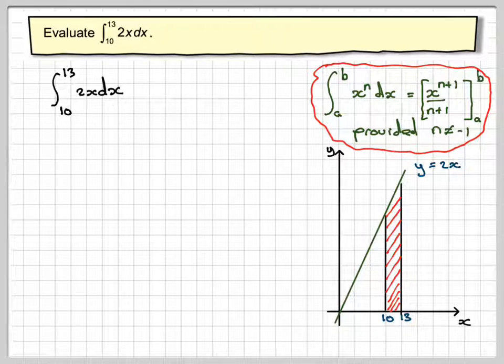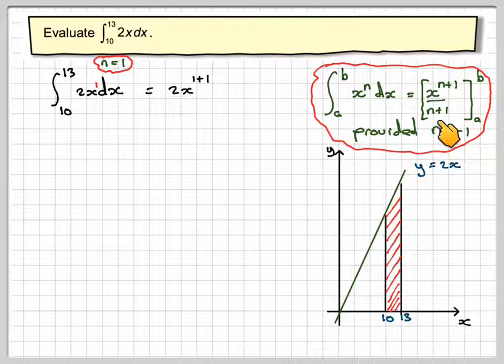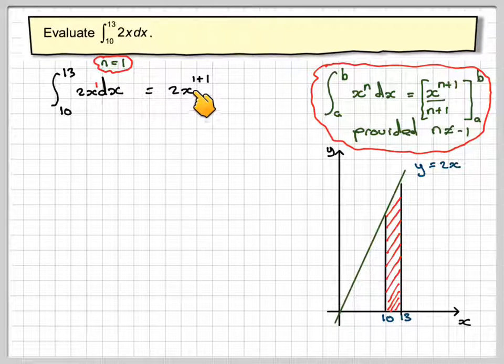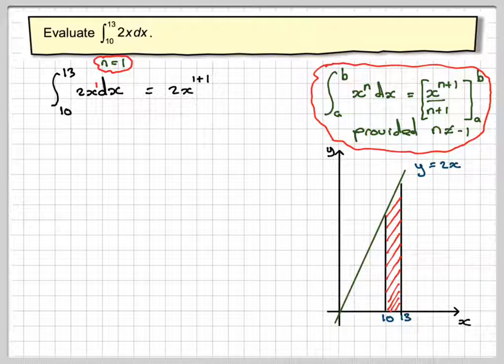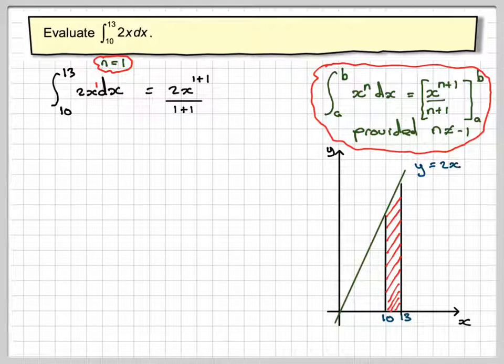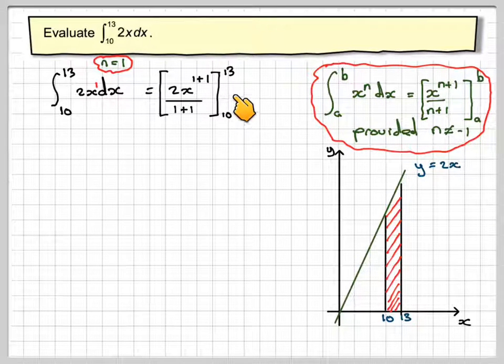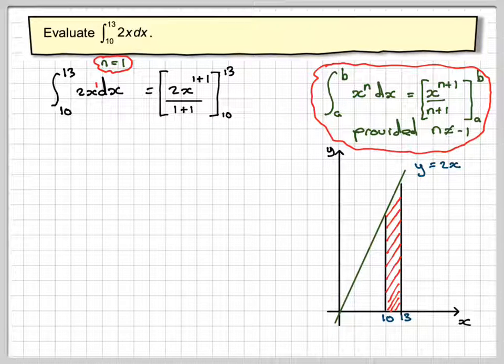Okay, back to the integral. So n is equal to 1 in our case, so we've got 2x to the 1. So it's going to be 2x, we're applying this formula here, we're going to have 2x to the 1 plus 1, and then you need to divide by the new power which is 1 plus 1, between 10 and 13. So the 10 and 13 now come down here.